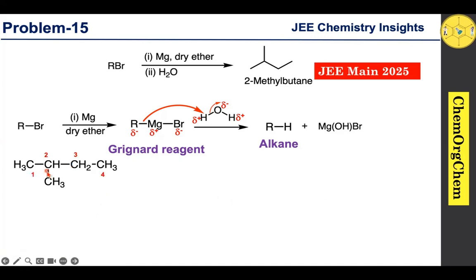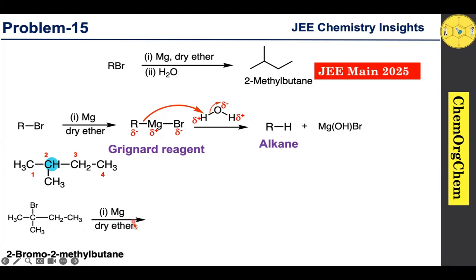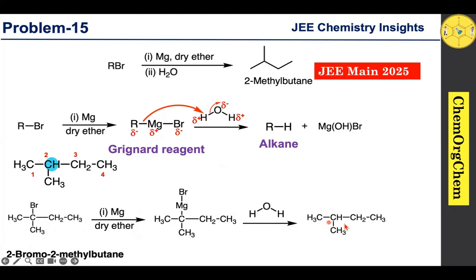Now think about if the second carbon has bromine substitution — that gives us 2-bromo-2-methylbutane. This reacts with magnesium in dry ether to form the Grignard reagent, which then reacts with water to produce 2-methylbutane as the final product. This is our third alkyl bromide.